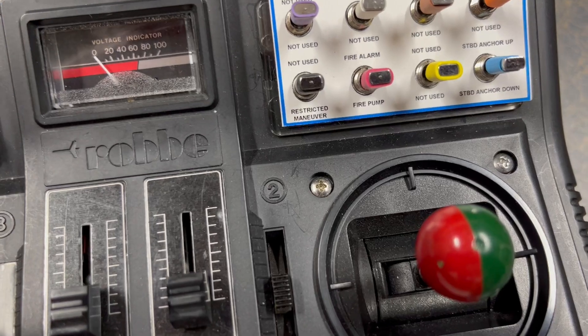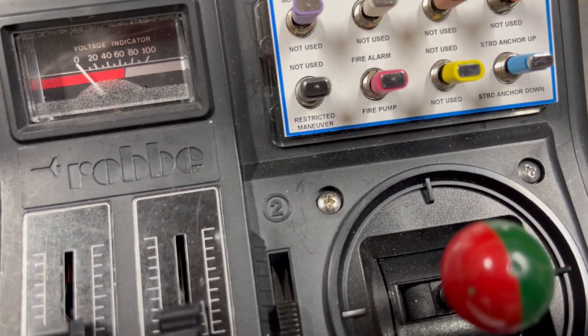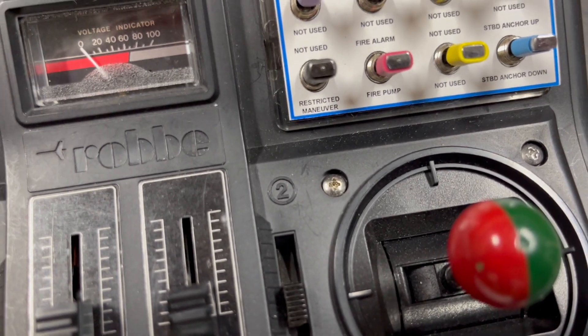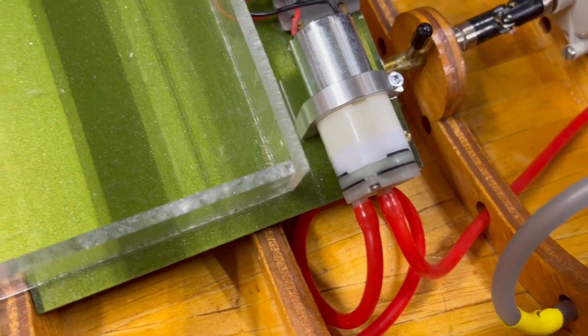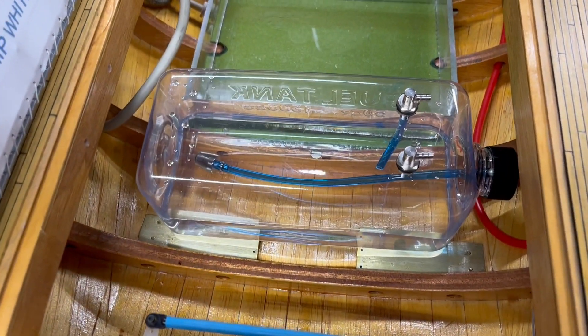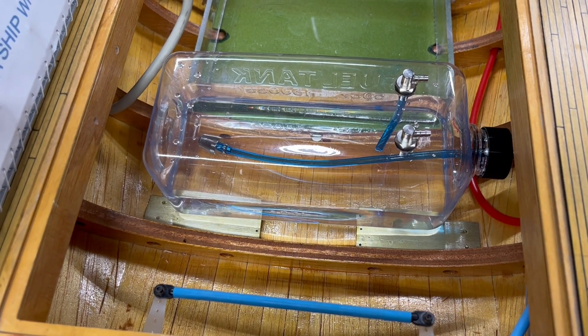So you see the switch here in red. If you flip that switch down, it turns on the fire pump. Now the fire pump is located down here in the hull. It pumps water from a reservoir. This is nothing more than a fuel tank for radio control airplanes.